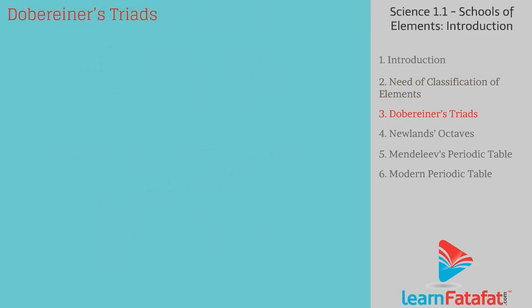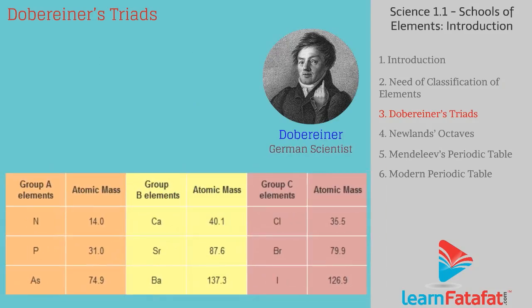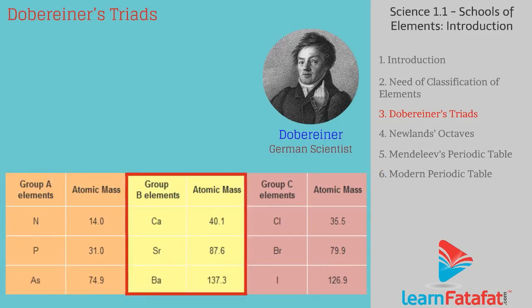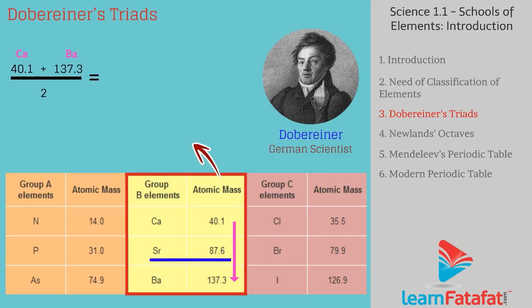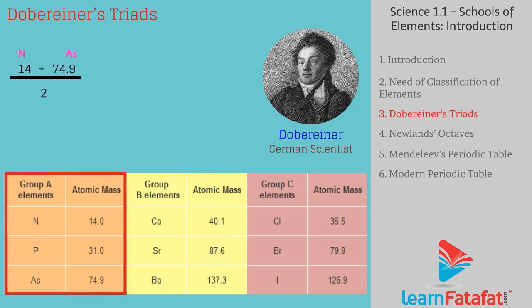To resolve this problem, Dobereiner, a German scientist, arranged elements based on atomic mass. He formed triads — groups of three elements arranged in increasing atomic masses — such that the atomic mass of the middle element is roughly the average of the atomic masses of the other two. However, the rule of triads was not applicable to all elements.